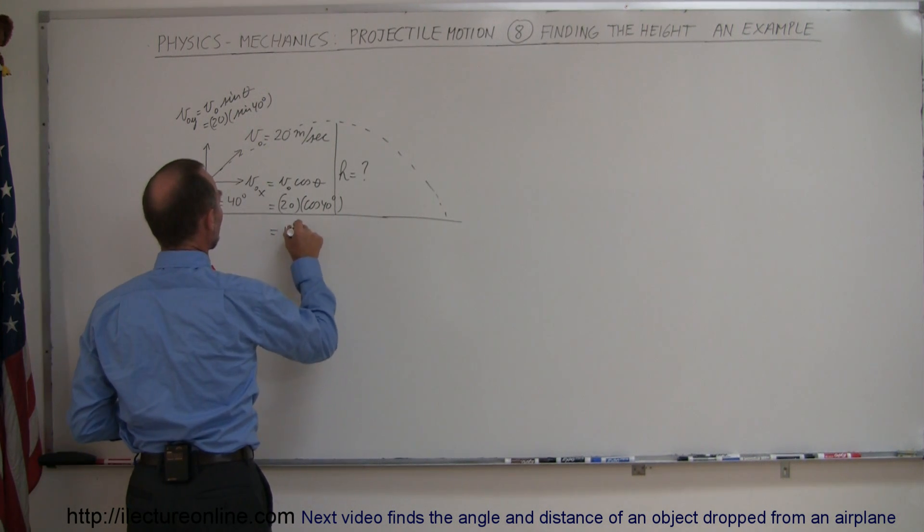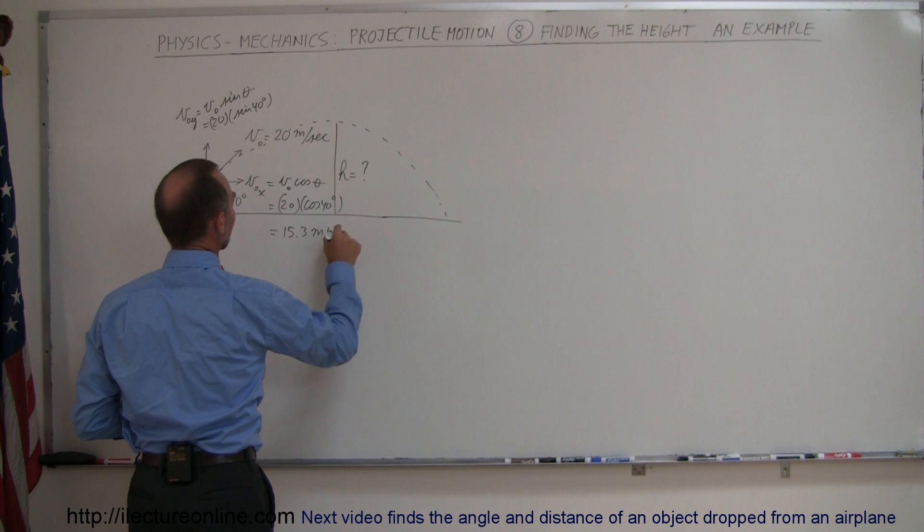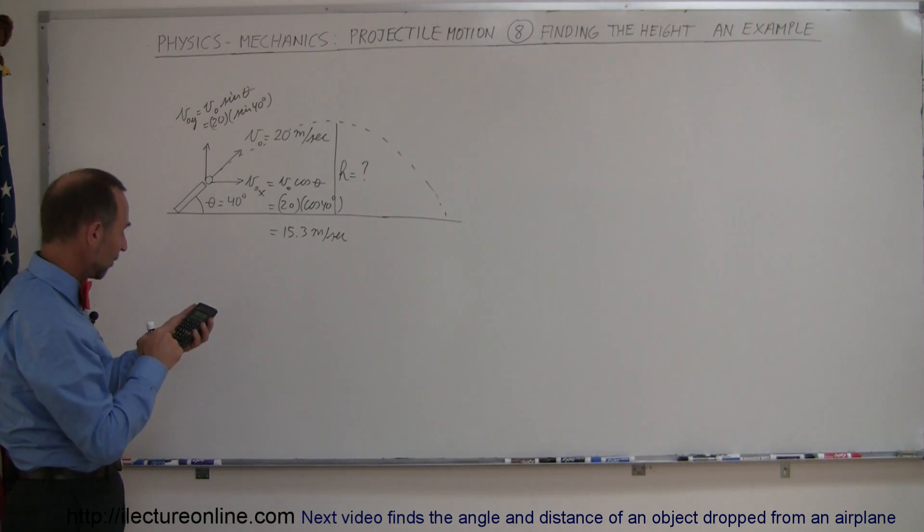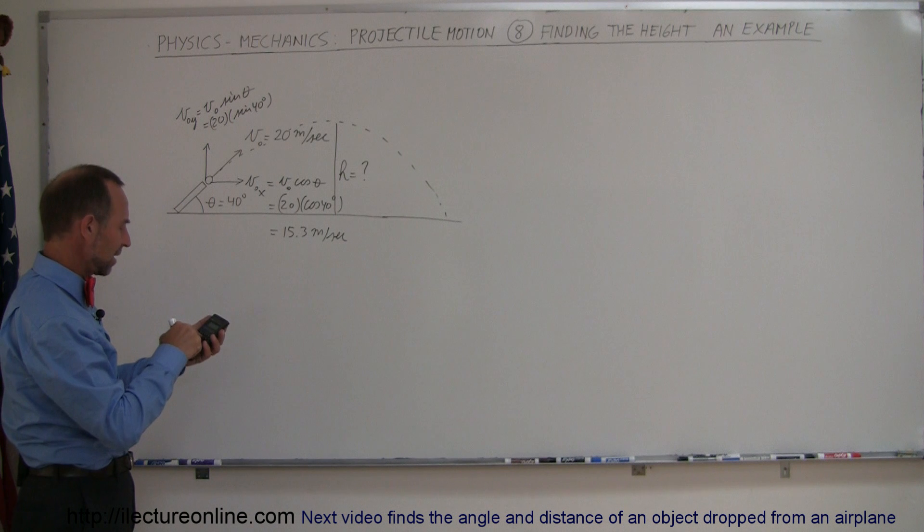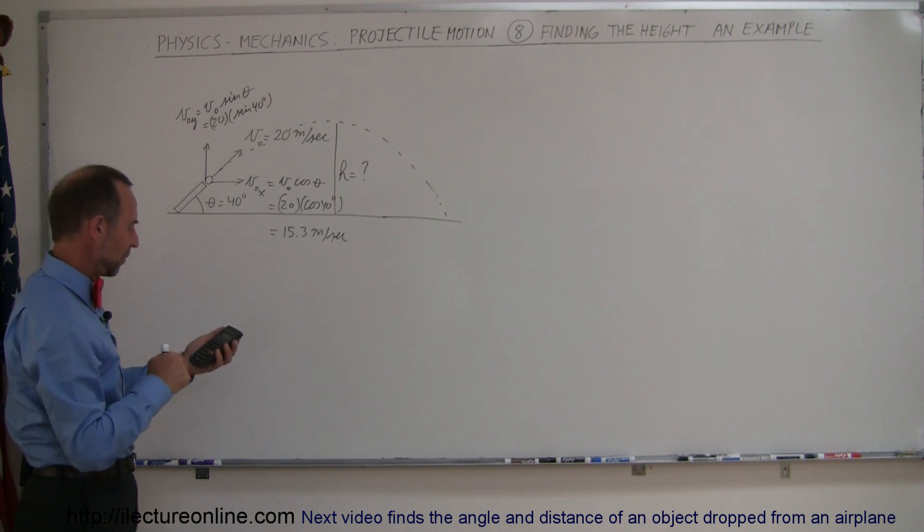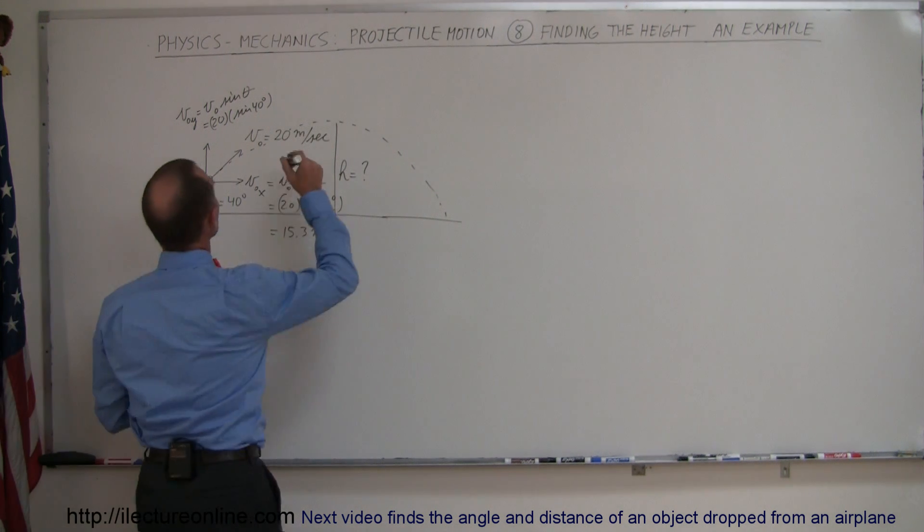So this is 15.3 meters per second. And for the y direction we get 40 times the sine times 20 and we get 12.9 meters per second.